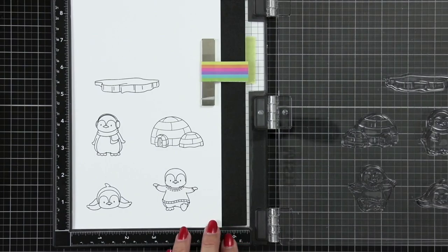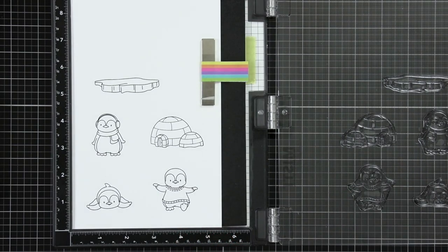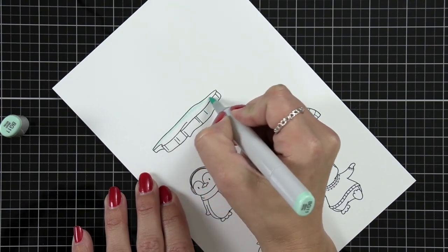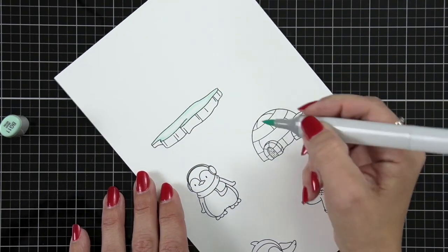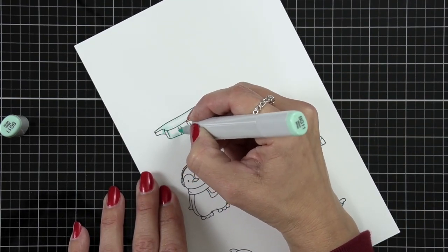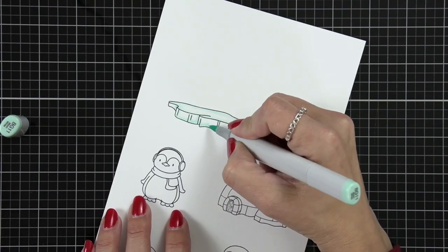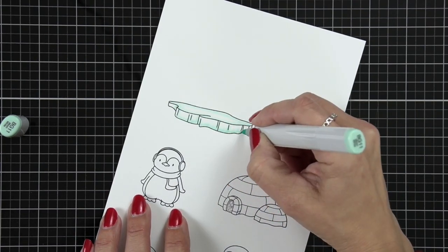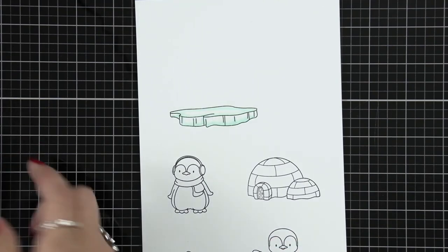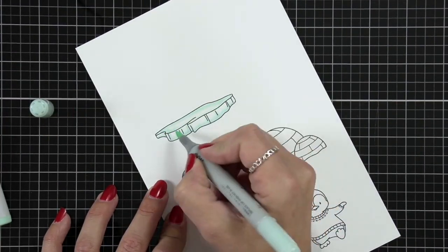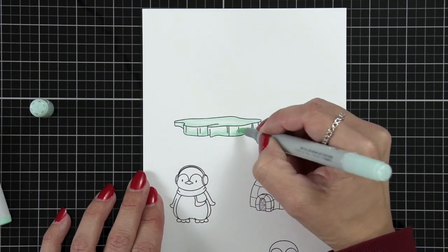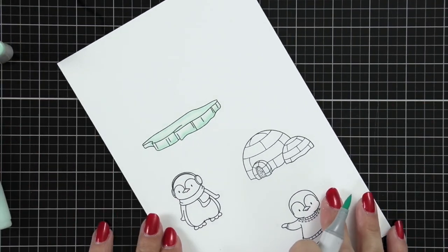Now I'm ready to do some Copic coloring. I'm starting with this chunk of ice that I'm going to have one of the penguins laying on and I'm just going to add a little bit of color with a BG11 and BG10. So I started off by really just outlining that top piece and then for the side portion of it I just kind of flicked up from the bottom and blending it out with the BG10.